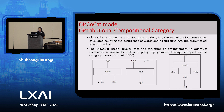In this paper, we use the DiscoCat model from the Lambek Quantum Toolkit. In classical NLP, models are distributional — the meaning of sentences is calculated by counting the occurrence of words and finding similarity and semantics between words, but the exact grammatical structure is lost. In the case of DiscoCat models, it is proven that the structure of entanglement in quantum mechanics is similar to that of pre-group grammar through compact closed category theory.